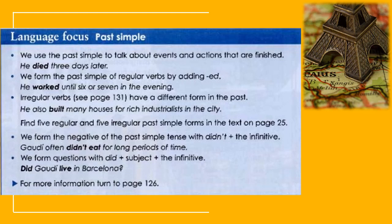We form the past simple of regular verbs by adding -ed. We make regular verbs into simple past tense by adding the -ed ending. For example: 'He worked until six or seven in the evening.' — Dia bekerja hingga pukul enam atau tujuh malam. 'Worked' comes from 'work' plus -ed, making it the second verb form.